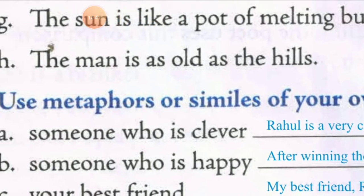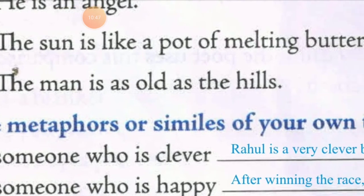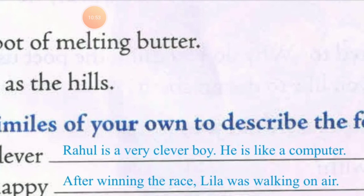Moving to the next: someone who is happy. Making a sentence — after winning the race, 'Leela was walking on air.' This sentence is a metaphor — it is clearly stating that Leela was walking on air, not 'like the air' or 'as if on air.' It is told in direct form, so this sentence is a metaphor.